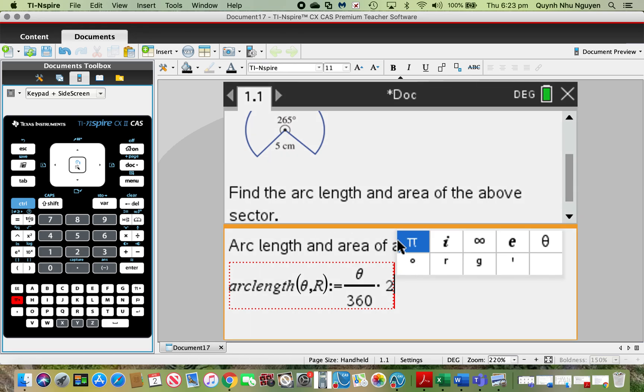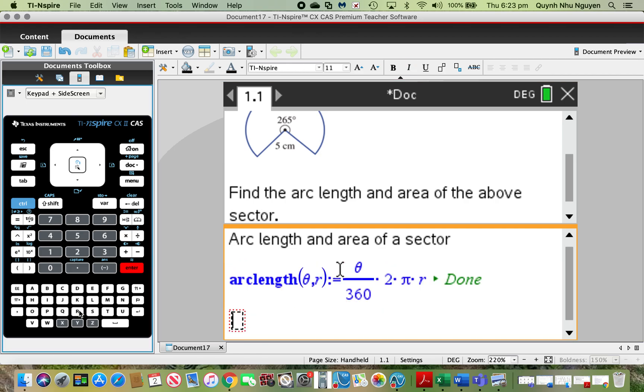Pi is just here, multiply by radius r, then press enter. The calculator will store this arc length rule for me in terms of theta and radius.